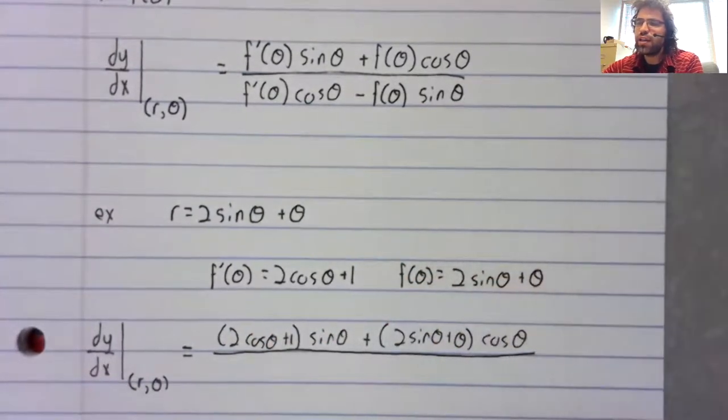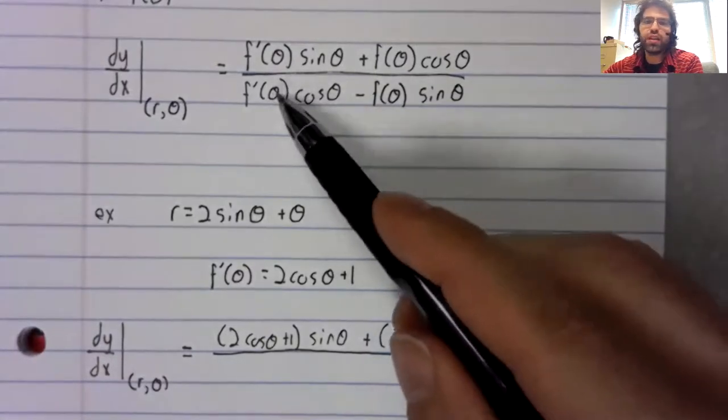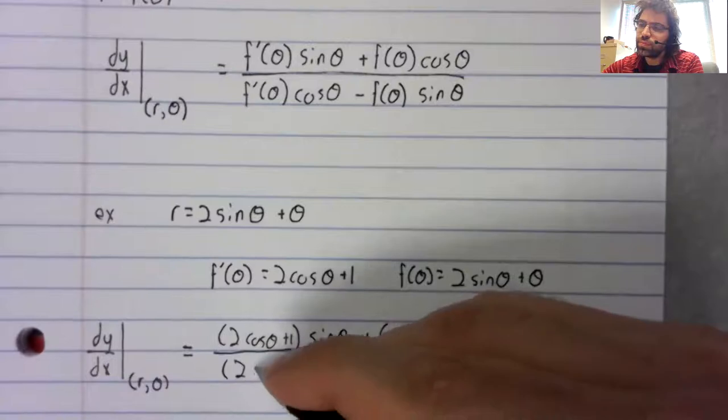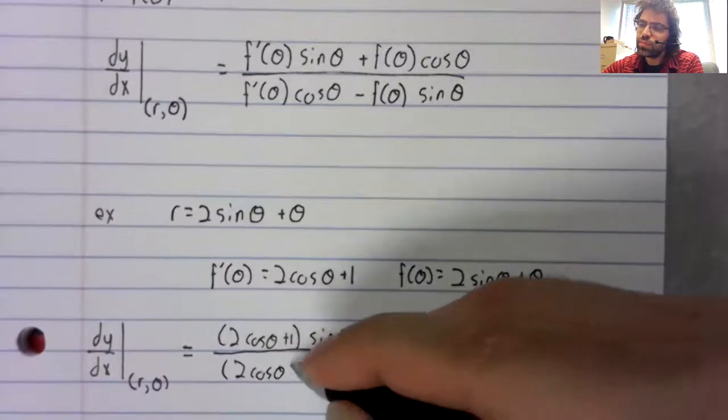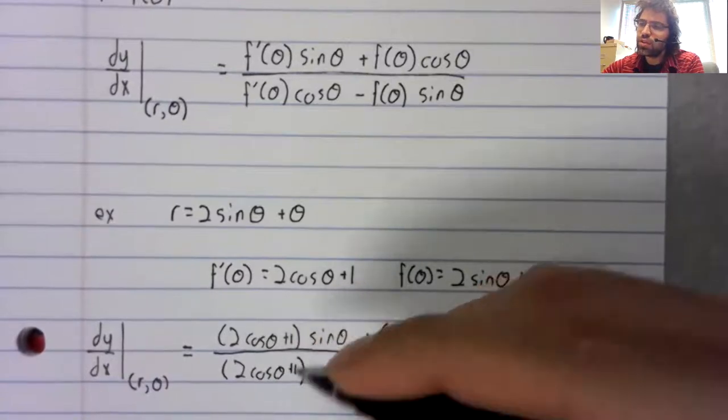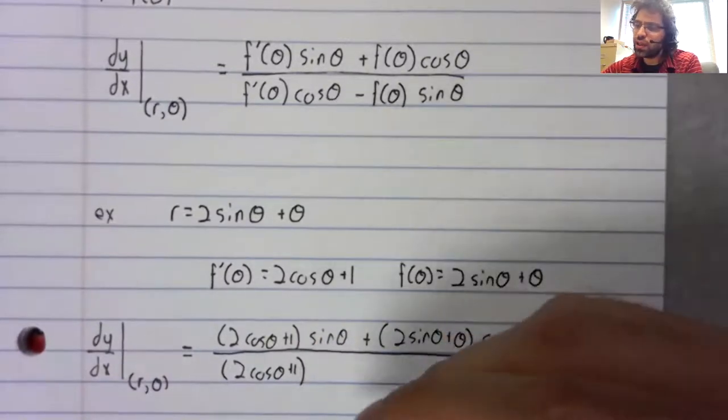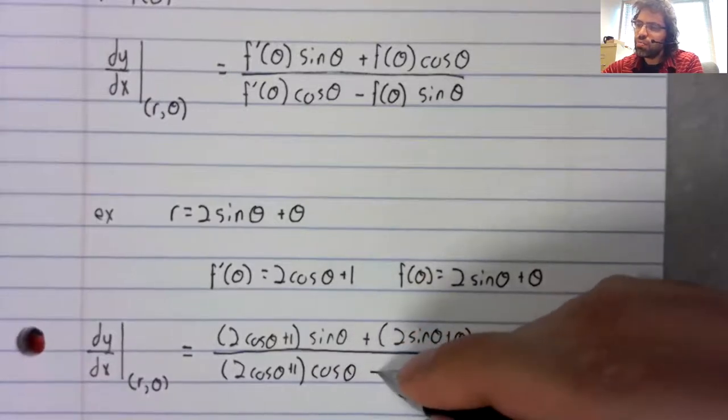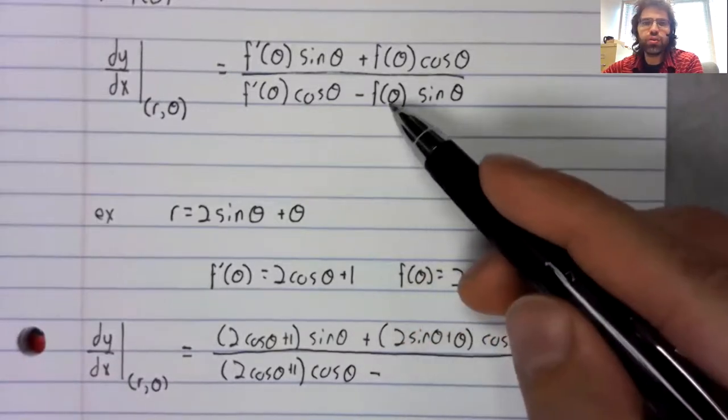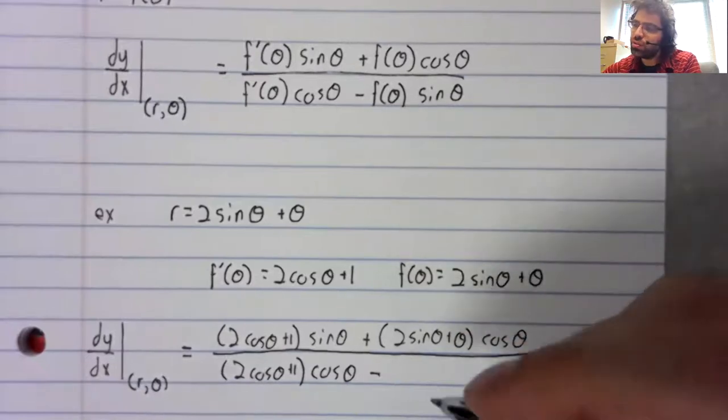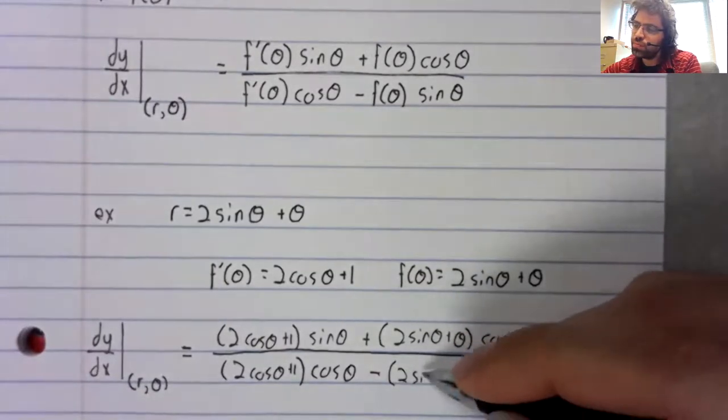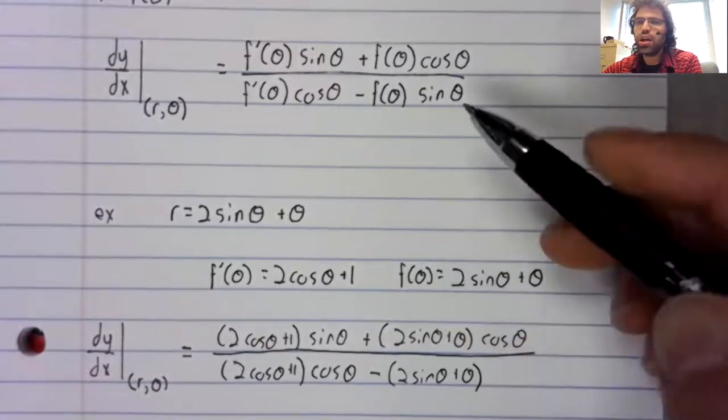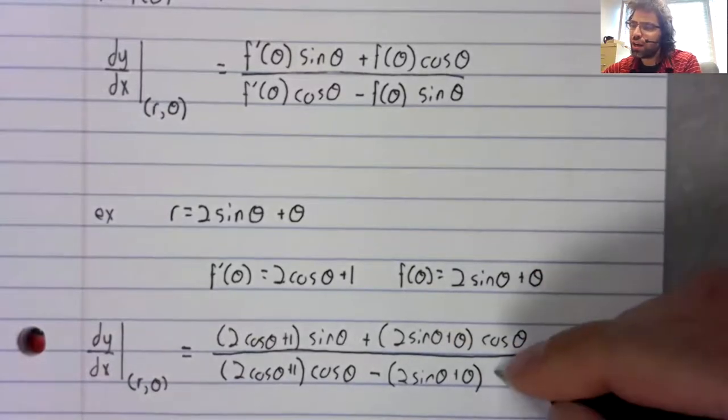divided by the derivative times the cosine, minus the original function times the sine.